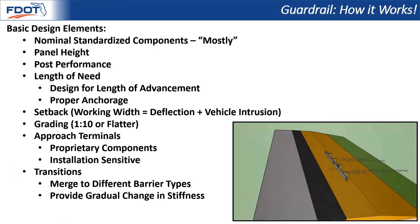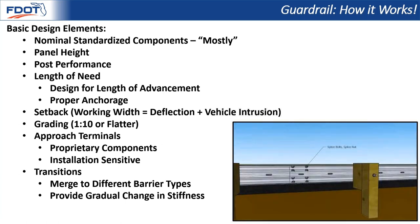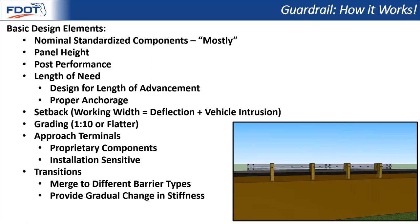From here, I'll go over some of the basic design elements of guardrail and how those elements add up to the system being crash worthy. Guardrail is made up of nominal standardized components that you can buy from a variety of manufacturers throughout the country — the W-beam components, the posts, the attachment bolts. They're readily available, mass-produced parts that give it the economy of mass installation. Some components beyond that which allow it to be crash worthy include panel height, which plays a part in capturing vehicles with higher centers of gravity. Post performance is a big part of it. Length of need, setback, grading, approach terminals, and transitions are all important elements I'll explain in more detail through the coming slides.